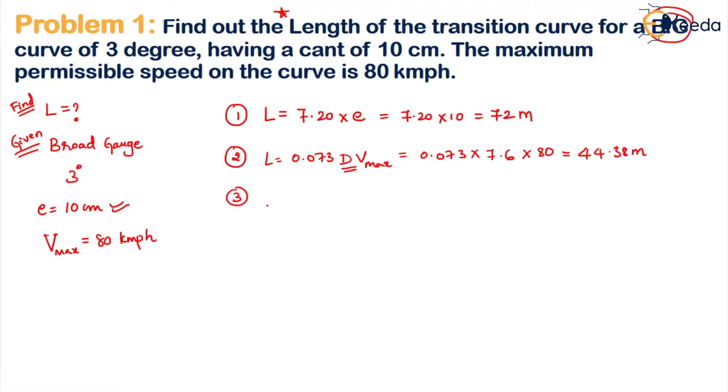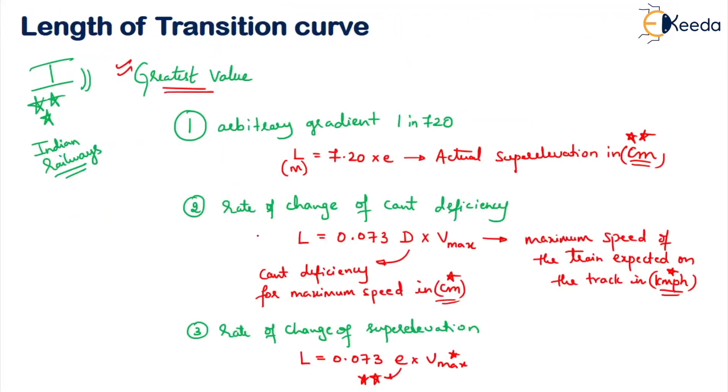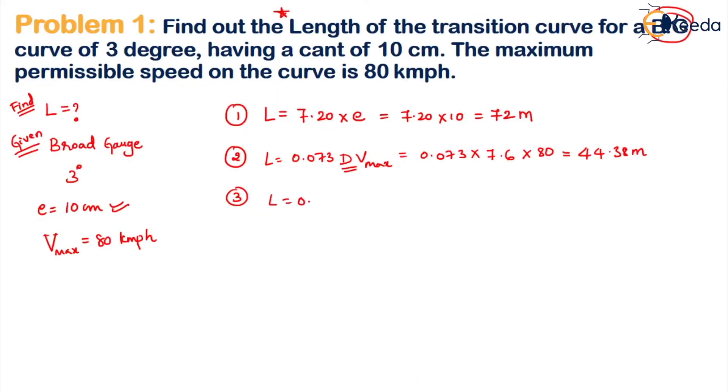The third formula is the same, but in place of D we replace it with E. So L = 0.073 × E × Vmax = 0.073 × 10 × 80. On simplification, the value is 58.40 meters.